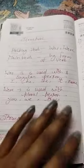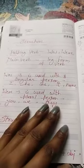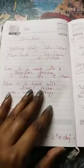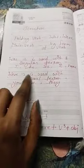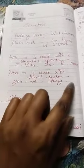So this is the structure. Subject + was/were + main verb (V+ing) + object. Was is used with singular persons: I, he, she, it, name. Were is used with plural persons like you, they.